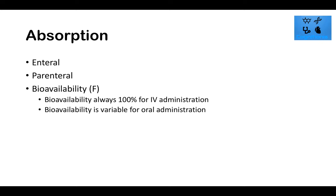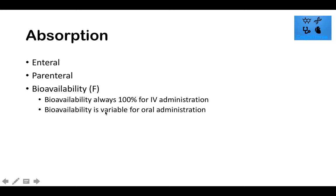After absorption through the intestines, the really big component to remember for oral administration is that the drug has to eventually bypass the liver. If you take a drug and absorb it in the intestines, it goes through the portal vein to the liver — that's where we have first-pass metabolism, which will absolutely decrease bioavailability.